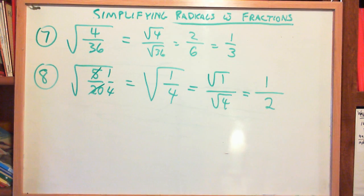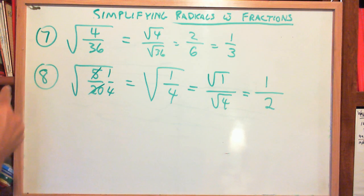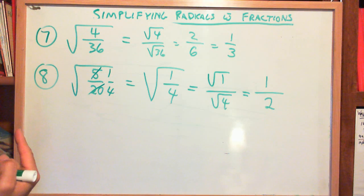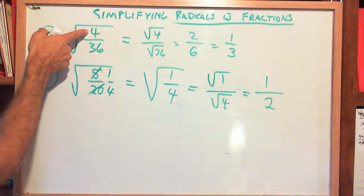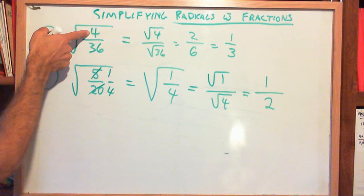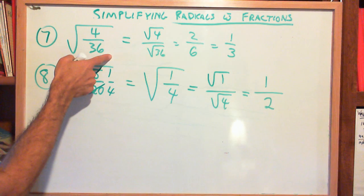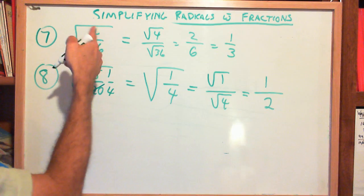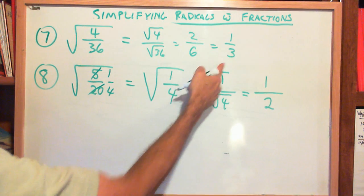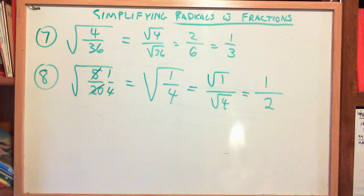You've got to look at these and determine the best step to take. For example, back on that earlier problem I could have also simplified by saying 4 goes into both: 4 over 36 gives 1 ninth. Square root of 1 ninth — square root of 1 is 1, square root of 9 is 3 — so the answer would also work out that way.